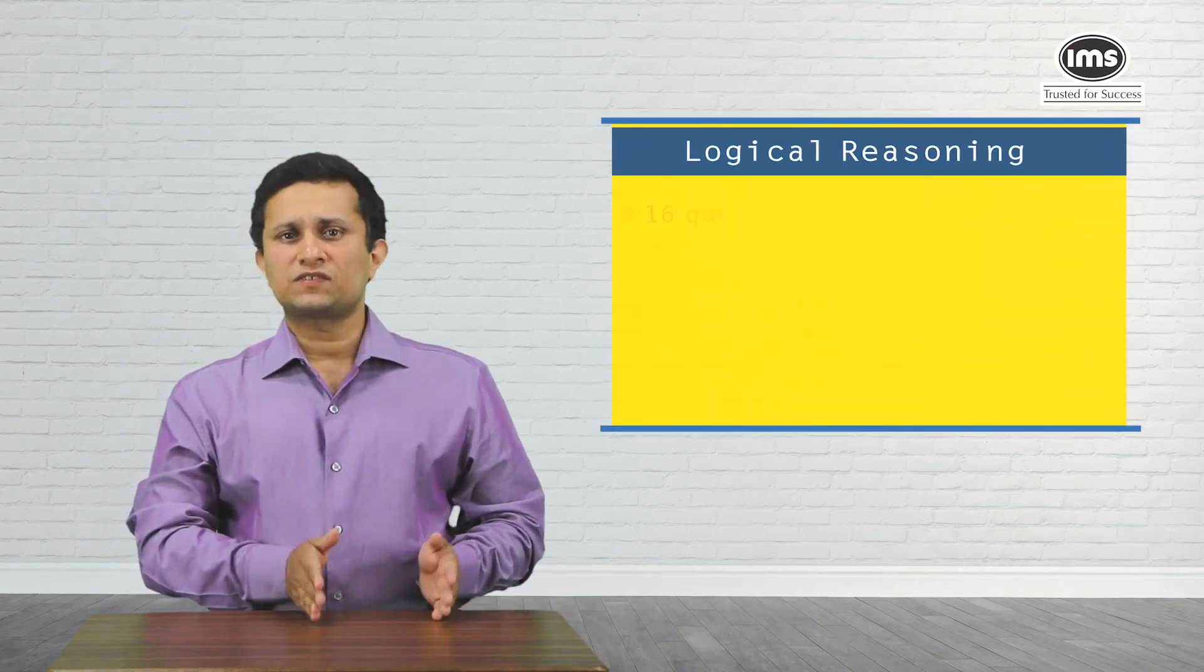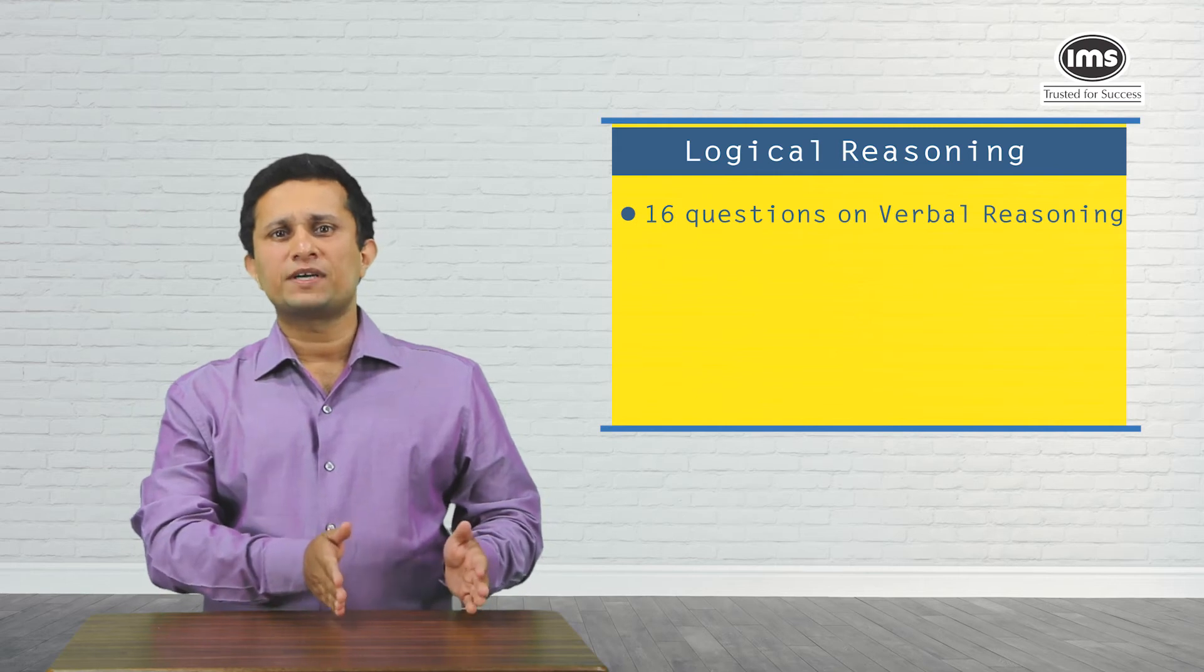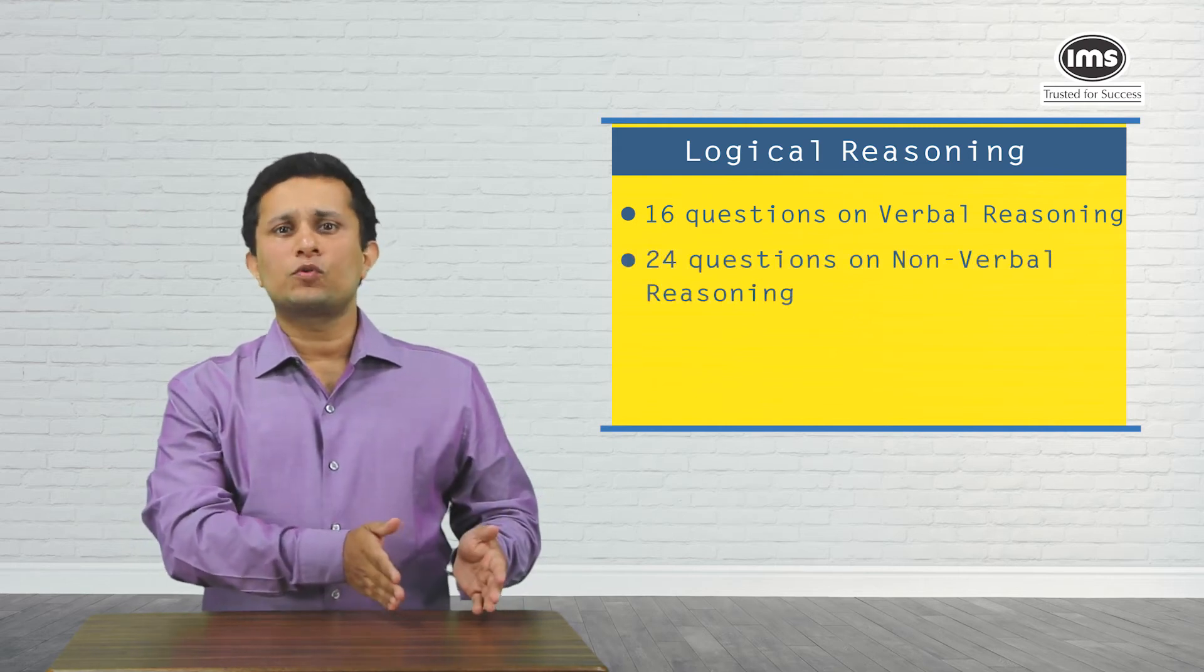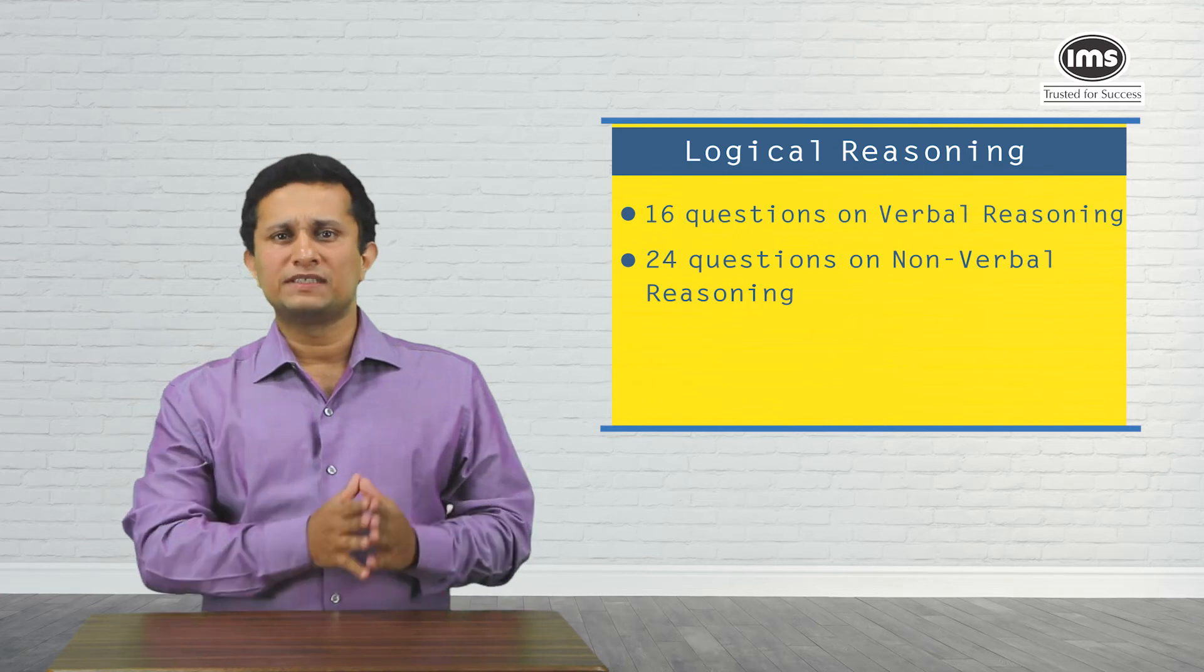Historically, NMAT has had anywhere between 12 to 13 verbal reasoning questions. Over the last couple of years, this proportion has increased. In 2018, we had 15 verbal reasoning questions, whereas this year, the number of questions from verbal reasoning has been reported at 16. The remaining 24 questions have been strictly non-verbal reasoning.